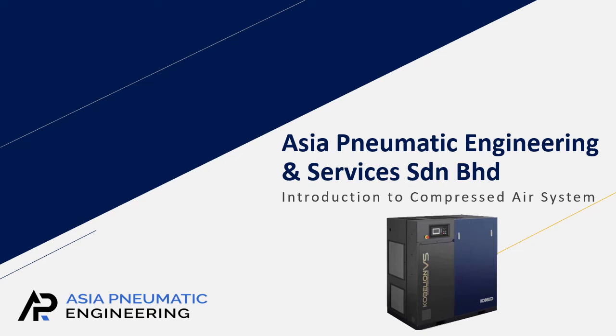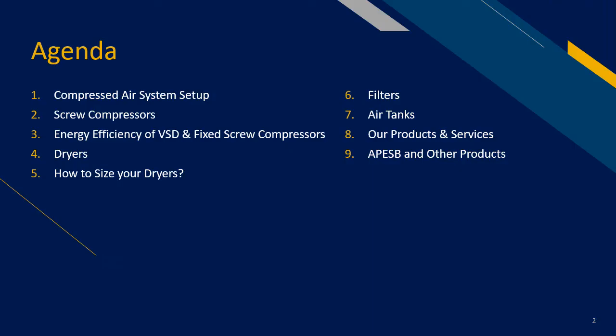In this series, we will have an overview of the entire compressed air system. We will be covering the following topics: explaining a compressed air system setup, the different types of screw compressors and their energy efficiency, the different types of dryers available and how to size them, filters and air tanks, and finally a summary introducing the products and services offered by Asia Pneumatic.